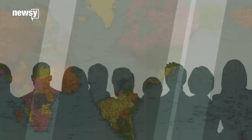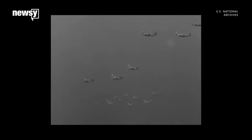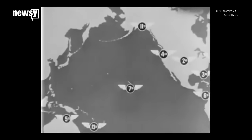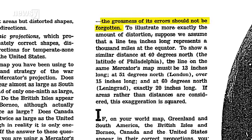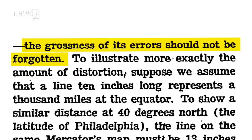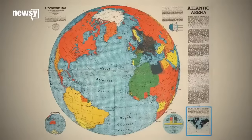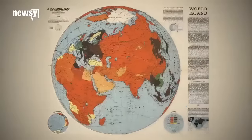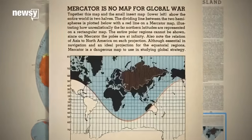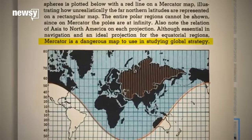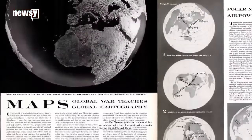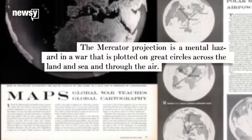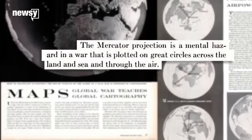Map makers and geographers were not happy. Everything started to change in the mid-20th century — there was a world war, and more airplanes were being used than ever before. Editorials published in the New York Times in the 1940s called for the Mercator to be discarded, reminding readers that the grossness of its errors should not be forgotten. In a series of orthographic maps in 1942 and 1943, Fortune magazine declared the Mercator is no map for global war, and called it a dangerous map for studying global strategy. An exposé on cartography published around the same time called the Mercator a mental hazard in a war plotted on great circles across the land, sea, and air.